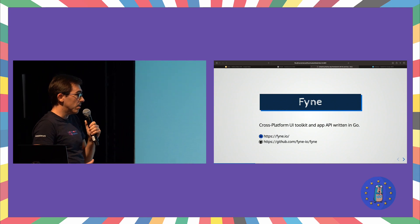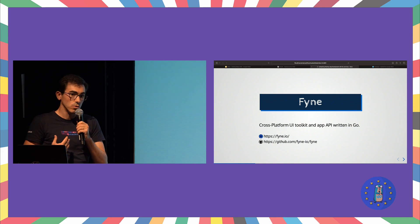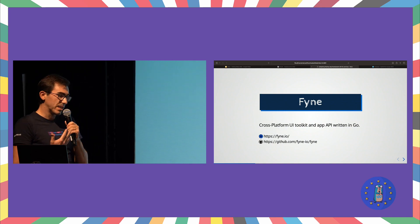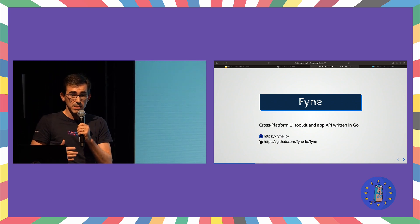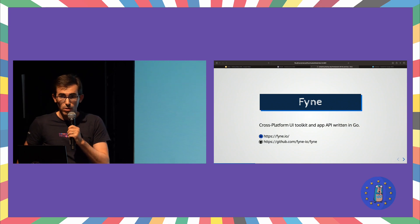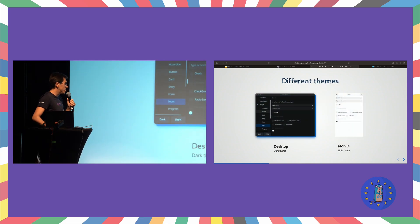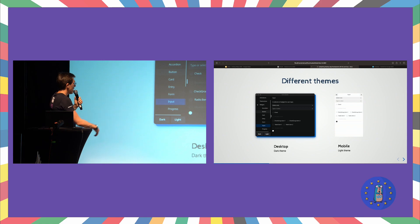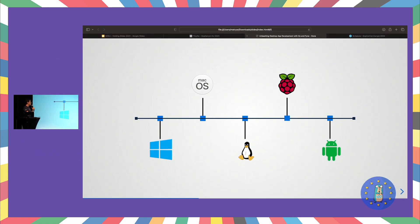Fyne has been built to allow us to run applications on desktop and mobile devices with a single Go code base. It provides different themes — the dark theme and the light theme — and it runs cross-platform on desktop and mobile devices.